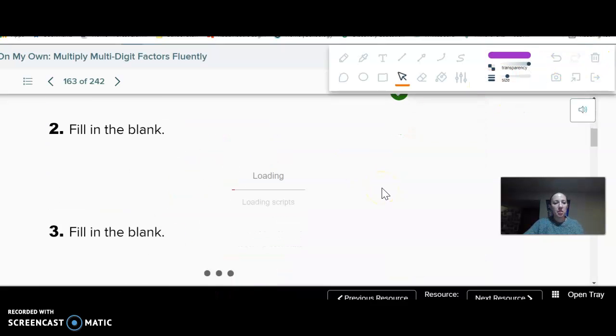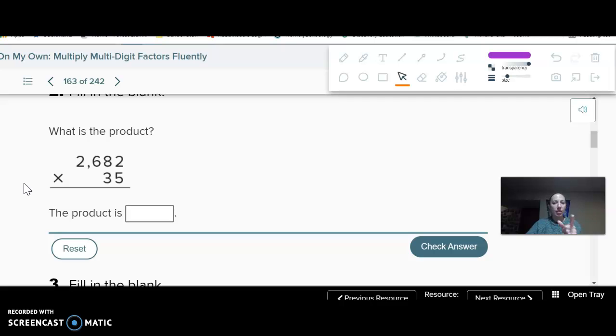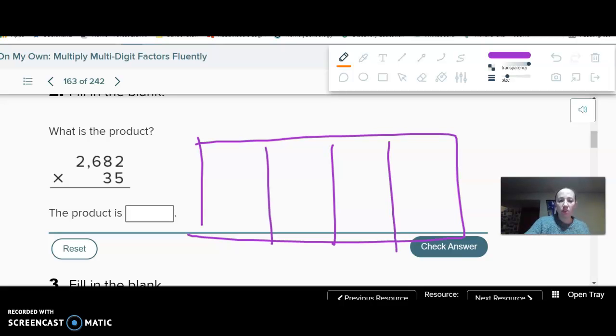2,682 times 35. Alright, let's do another. Go ahead and figure it out. Alright, I hope you got it. This one, I will do the area model. My computer is being weird, so sorry if there was a weird glitchy thing. Alright, area model. So 4 digits by 2 digits. So I need to have a box that's 4 digits by 2. Now I'm going to have 2,682, so in expanded form, and then 35.